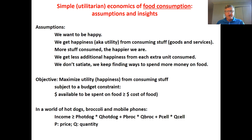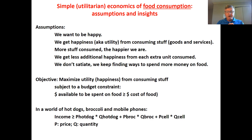We can take those assumptions and put them into a mathematical problem that a consumer would have. The consumer has the choice of maximizing the amount of happiness they get from consuming stuff, subject to the amount of money available to buy stuff. In a world with hot dogs, broccoli, and cell phones, our budget constraint is that our income has to be greater than or equal to what we spend on each — price times quantity. If hot dogs cost one dollar per package and we consume one package, that's a total cost of one dollar.